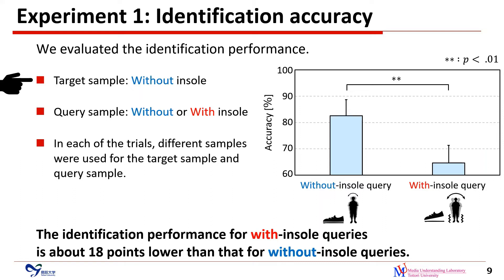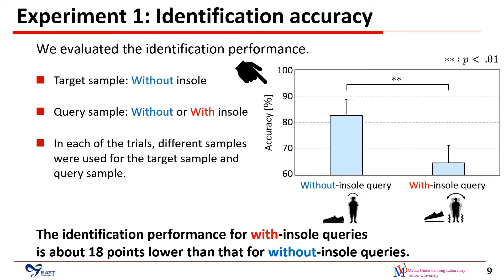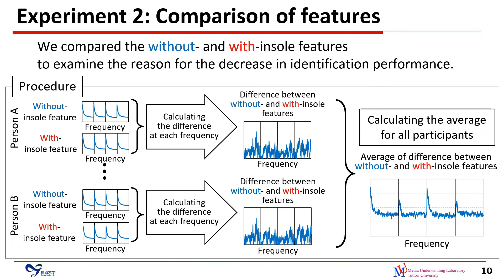We evaluated the identification performance. We used the features of without-insole video sequences as the target samples. We used the features of without-insole or with-insole video sequences as the query samples. In each trial, different samples were used for the target and query samples. We compared the identification accuracy between without-insole and with-insole. The identification performance for with-insole queries is about 18 points lower than that for without-insole queries.